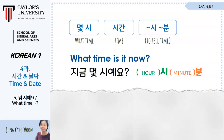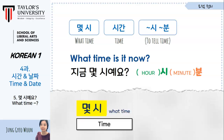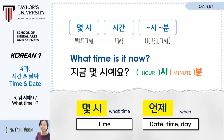There is one more interrogative to practice alongside time expressions: 언제. 몇 시 is used specifically to ask the time, while 언제 has a wider use — it can ask about date, time, or day. 언제 means 'when.' 언제예요? — When is it? For example: 시험이 언제예요? — When is your exam? 수업이 언제예요? — When is your class? So 언제 covers most time-related questions.